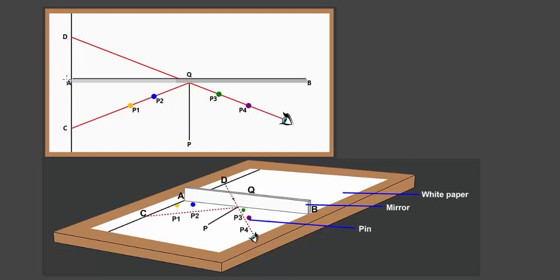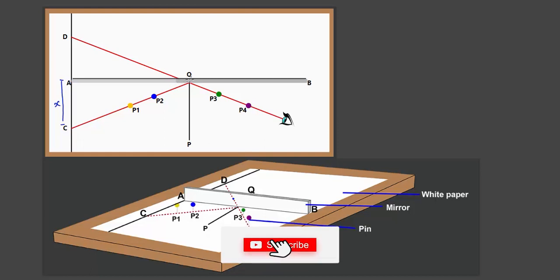This is how the experiment goes. You measure distance x, which is the distance between point A and point C — let's say that distance is 4 cm, so x equals 4 cm. Once you have x, you draw a line from point C up to point Q, giving you line CQ.